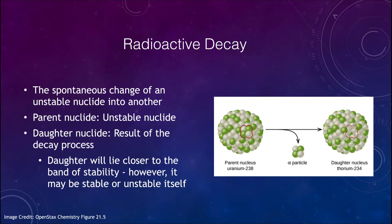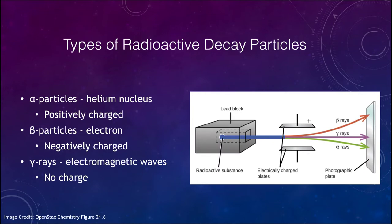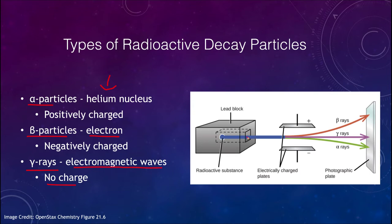Let's look at the radioactive decay particles. There are three primary ones: the alpha particle, the beta particle, and the gamma rays. The alpha particle is a helium nucleus, which is positively charged. The beta particle is an electron, which is negatively charged, and gamma rays are electromagnetic waves which have no charge. These have been detected by shielding radioactive substances in lead so the particles come out in one direction through electrically charged plates — beta rays go one way, alpha rays go the other, and gamma rays go straight through.